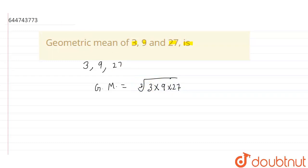So now we can write 27 as 9 into 3. So we will write 27 as 9 into 3.